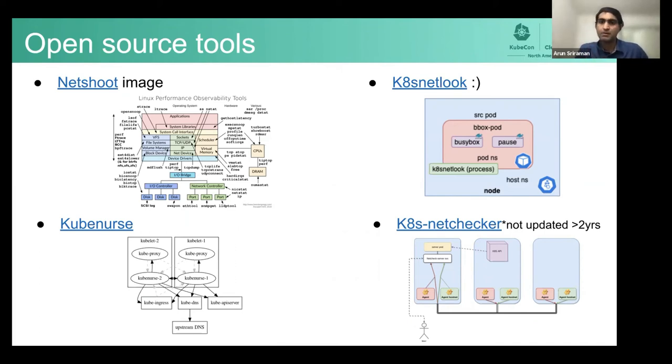So the pod networking is healthy. But it doesn't tell you why your pod is not working. Because it could be that there are other apps running on the same node that's working, and you'd still get a healthy result, but your app might still be crashing. So that's where k8s-netlook comes in. And Netshoot, to some extent, comes into play. K8s-net-checker is another probe-based tool. It's not been updated for a long, long time. So I'll leave it as this.